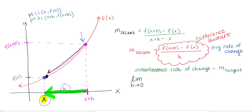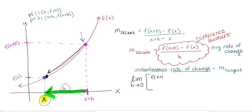The limit as h approaches 0 is going to make that horizontal distance between the two points as close to 0 as possible — but it doesn't have to be exactly 0, because then I don't have two points. I still want to calculate slope because it's still a rate of change. So using the slope formula with those two points — that difference quotient — gives me the instantaneous rate of change, the slope of the tangent line. We define this to be the first derivative.